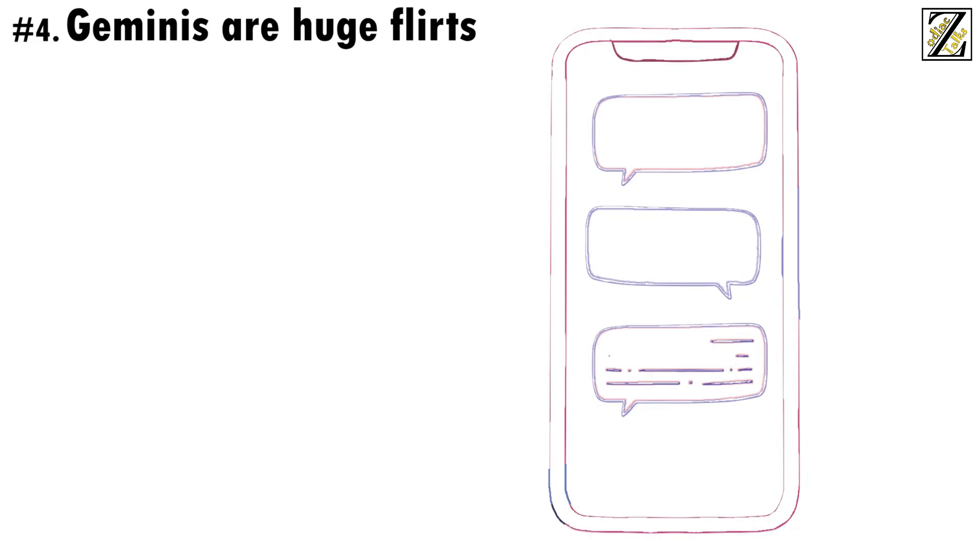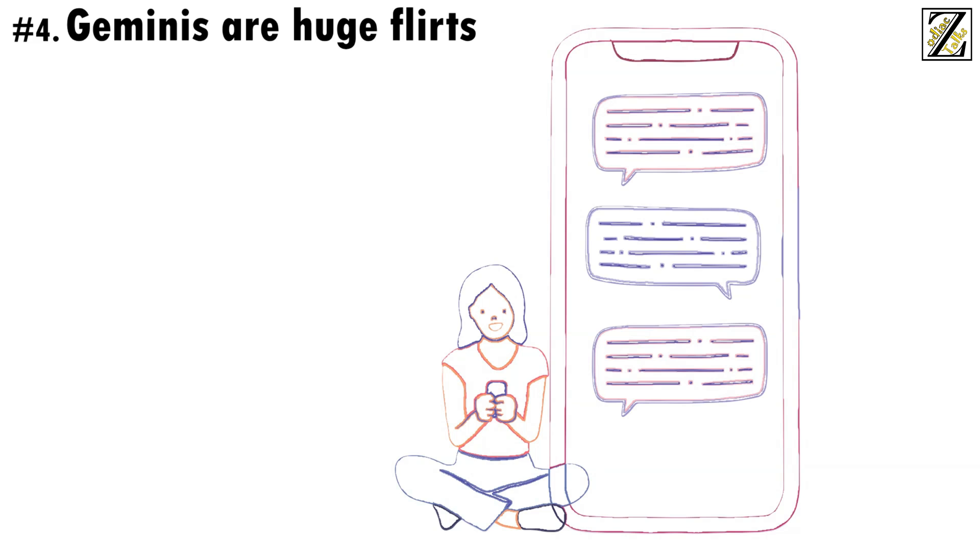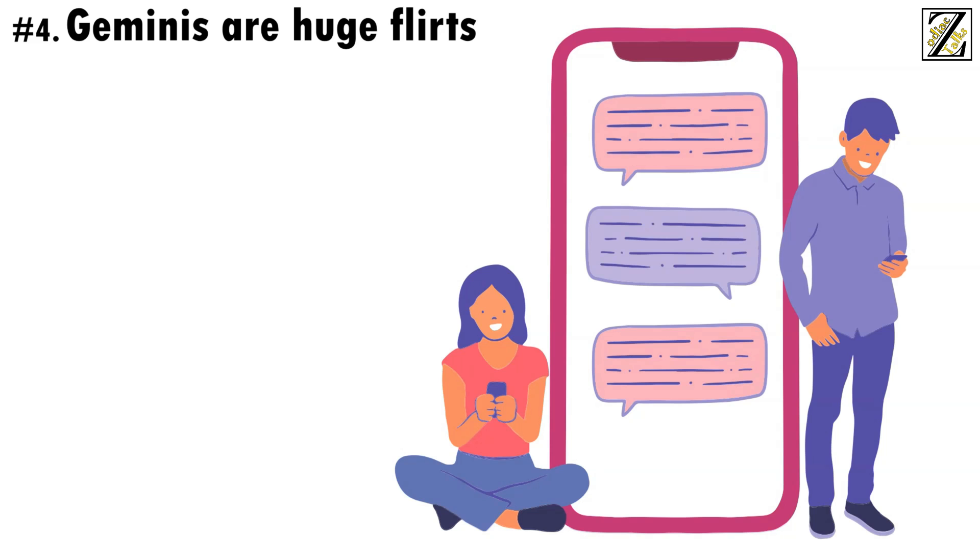Number 4, Geminis are huge flirts. Thanks to their magnetic personalities, Geminis are always being flirted on, and they genuinely see no problem with flirting back. The way Gemini sees it is simple. If they don't cheat, then flirting is just harmless fun. A fun way to pass the time and nothing more.